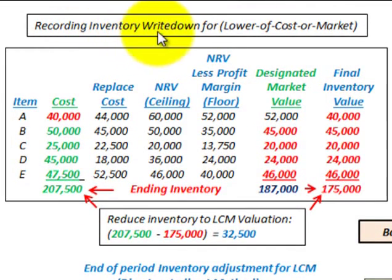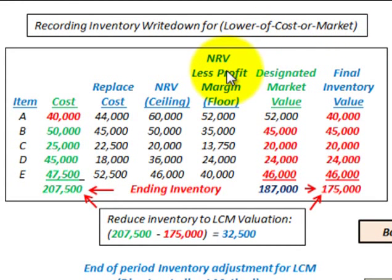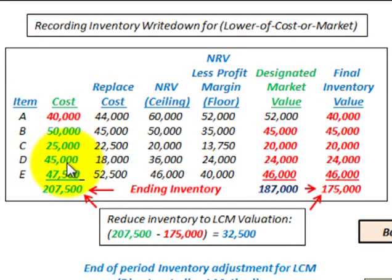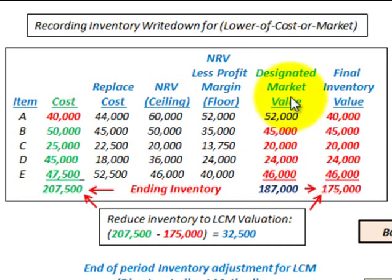Here we're going to be looking at recording our inventory for the lower of cost or market. We're going to be applying this lower cost of market rule for our ending inventory. We have our ending inventory items, we have a cost on those items — that's what we're costing this inventory out at — but then we have to come up with our lower cost of market.